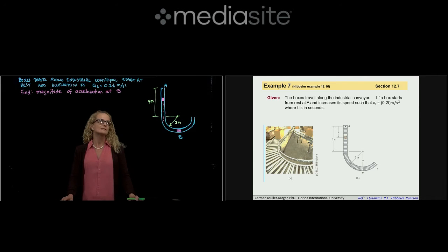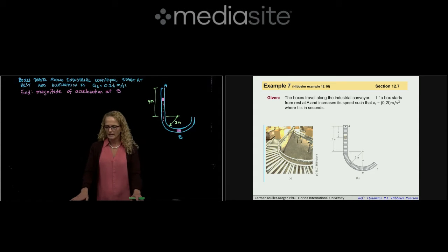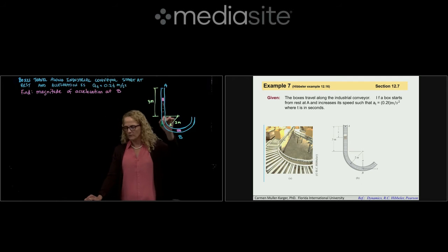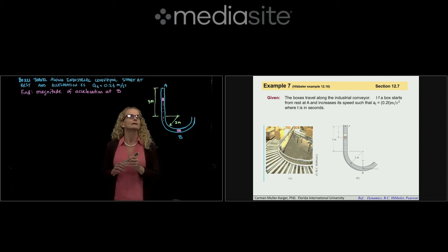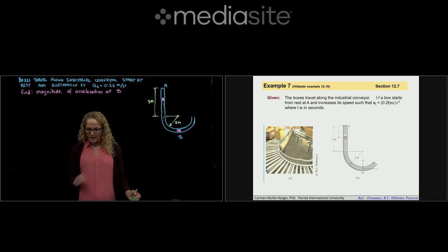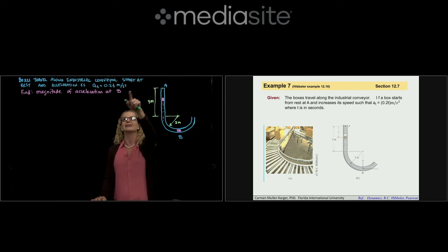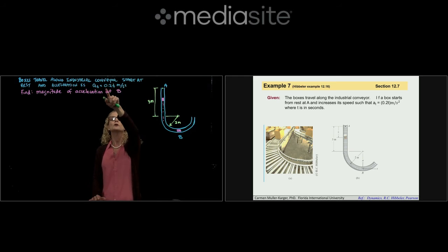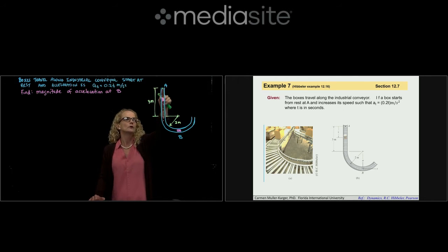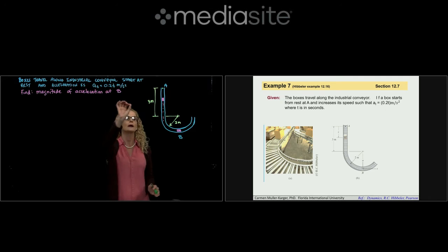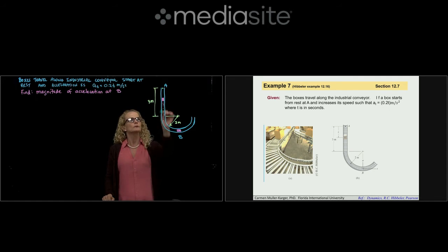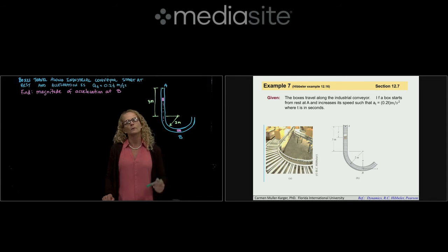This is example number 7 from section 12.7. Boxes travel along an industrial conveyor. If a box starts from rest at A — the initial position — and increases its speed such that the tangential acceleration is 0.2 times t meters per second squared, it covers a distance of 3 meters in a straight section and then follows a circular path to point B. We need to find the magnitude of the acceleration at B.